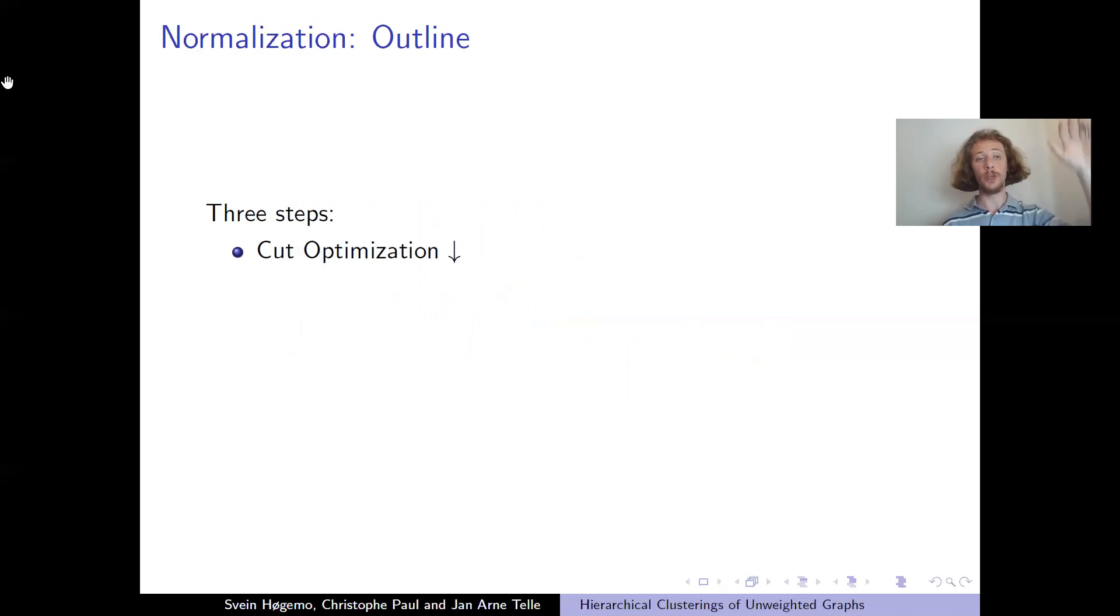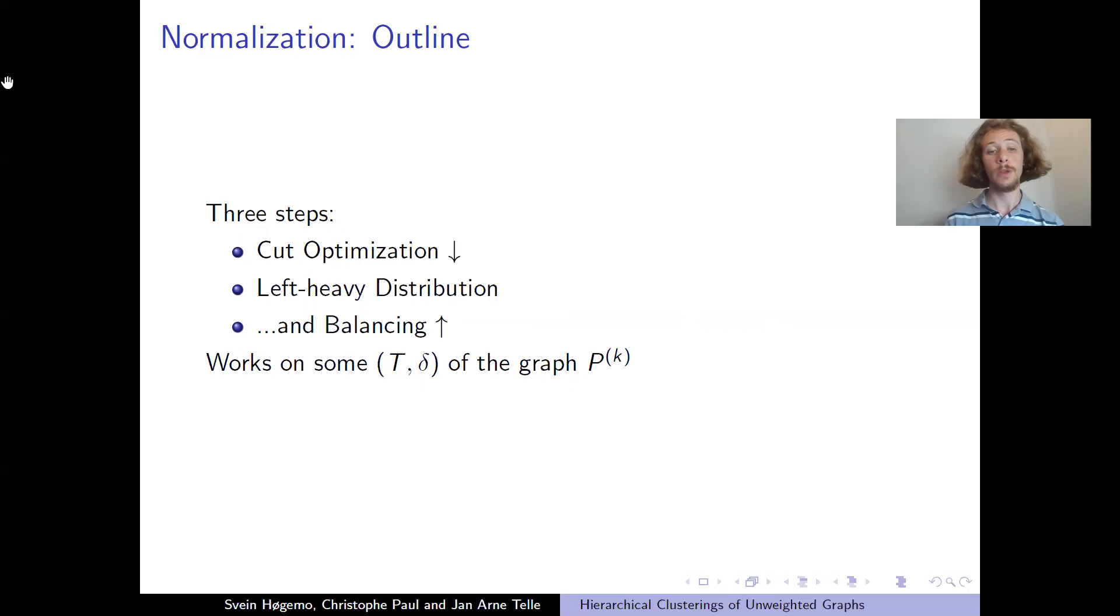It works in three steps. First, we do a top down traversal with the tree. The first step, which we call cut optimization, and the next step, which we call left-heavy distribution, works in tandem with the third step balancing in the bottom-up traversal of the tree, clustering tree. And we start with some random clustering. And then we want to show that we can always modify it into this normal clustering without decreasing the cost, the overall cost.